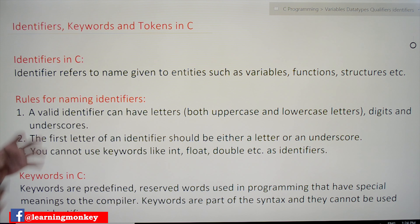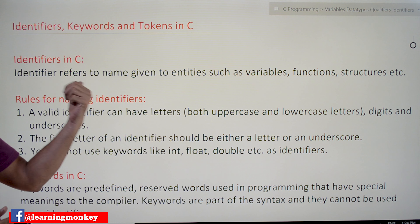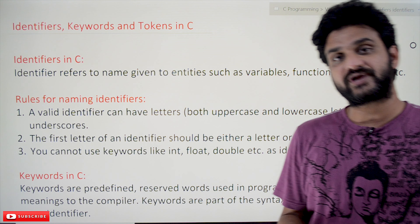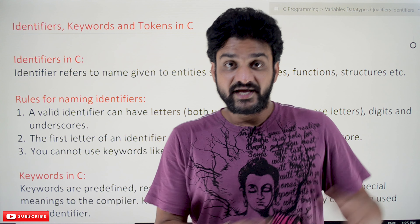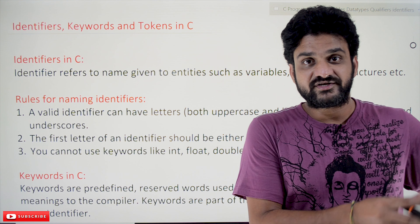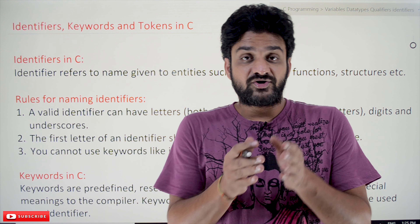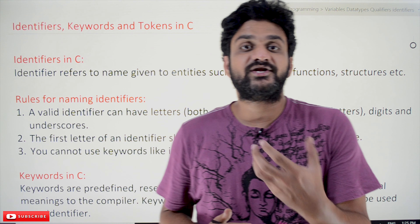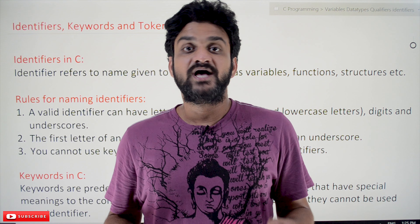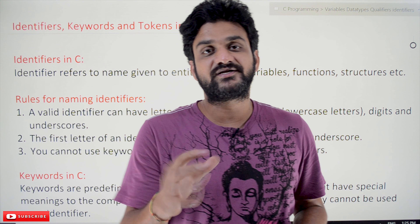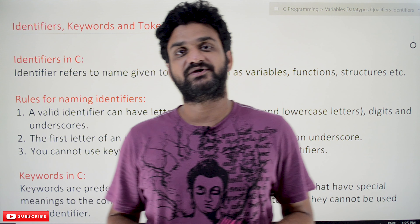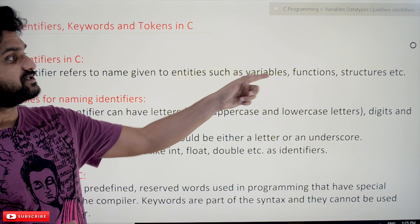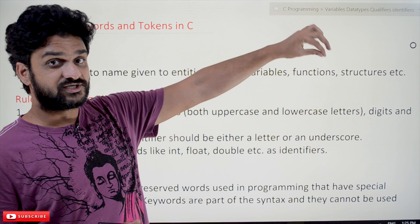Now let's try to understand the definitions of identifiers, keywords, and tokens in C. An identifier refers to the name given to entities such as variables, functions, and structures. As we have seen in our program — int a, b, c — those are declared variables. If you haven't watched those previous videos, please watch them and come back. The link for the playlist is provided in the description below.